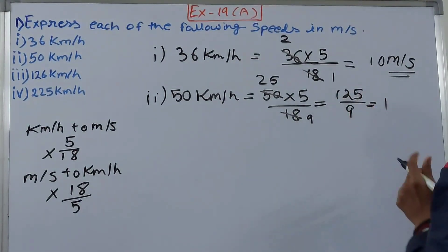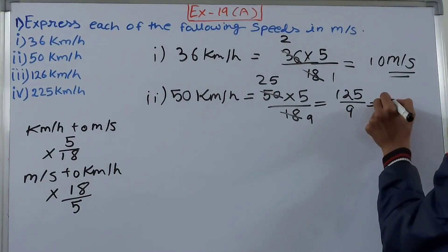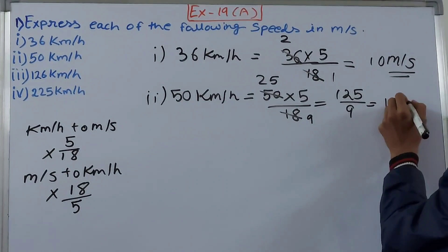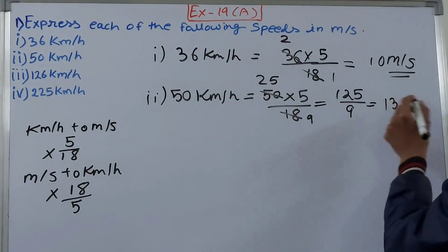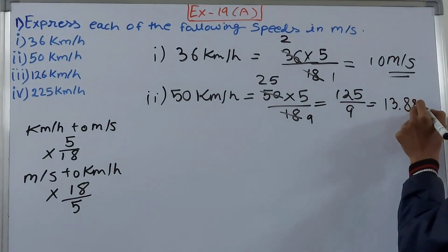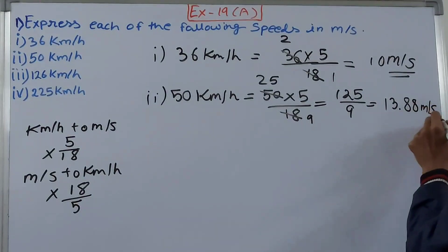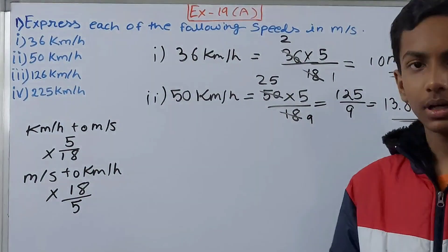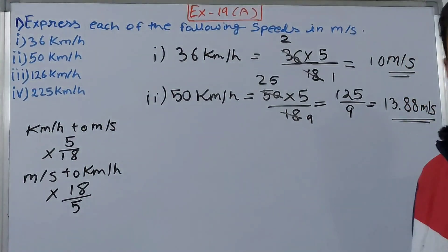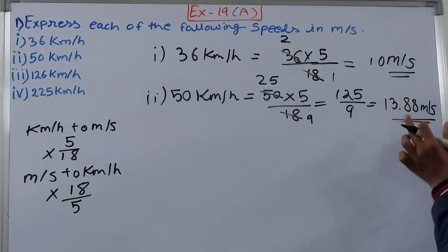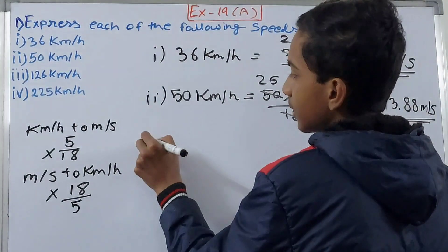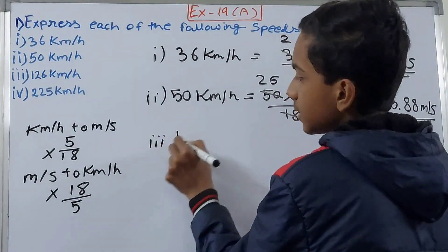This becomes 125 upon 9, that becomes how many meter per second? 9 into 1 is 9, 35, so 3, and 8 left. Point, and again 8 and 8. So 13.88 meter per second. This will be a recurring decimal, you can leave it at 13.88 meter per second only.